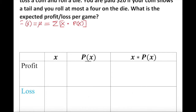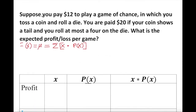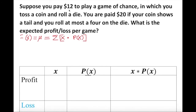So what is my discrete random variable x? This comes from the question itself. Suppose you pay $12 — so you pay $12, that is gone, it's not in your pocket anymore. That is the loss. You are not going to get that back. So $12 is a loss; I put down negative $12 here.